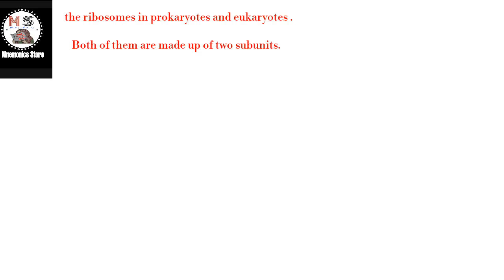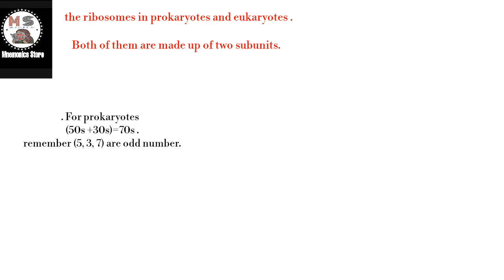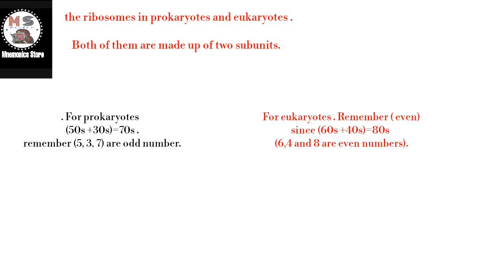Also, the ribosomes in prokaryotes and eukaryotes differ. Both of them are made up of two subunits. For prokaryotes: 50S plus 30S equals 70S. Remember, 5, 3, and 7 are odd numbers. For eukaryotes: 60S plus 40S equals 80S. Remember, 6, 4, and 8 are even numbers.